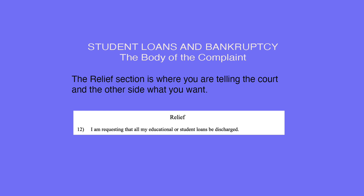Next is the Relief section. In this section, you are telling the court and the other side what you want. Just copy everything you see here. You'll write: 'I am requesting that all my educational or student loans be discharged.'